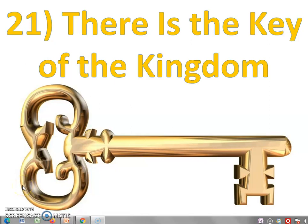Welcome dear students. Today we are going to learn standard third subject English, chapter number 21: 'There is the key of the kingdom.' In this poem, the poet talks about a key which belongs to a kingdom. Let's begin our poem.